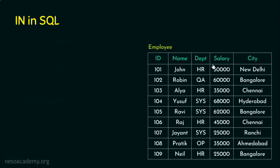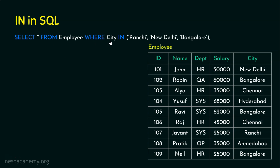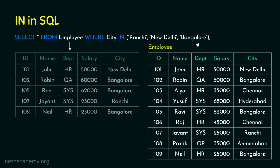Let's look at the employee table. The query is: SELECT * FROM employee WHERE city IN ('Ranchi', 'New Delhi', 'Bangalore'). These are string types, so we enclose them in single quotes. For numeric ID values, we can use them directly like 101, 103, 105. The output will be the rows where the city is Ranchi, New Delhi, or Bangalore.